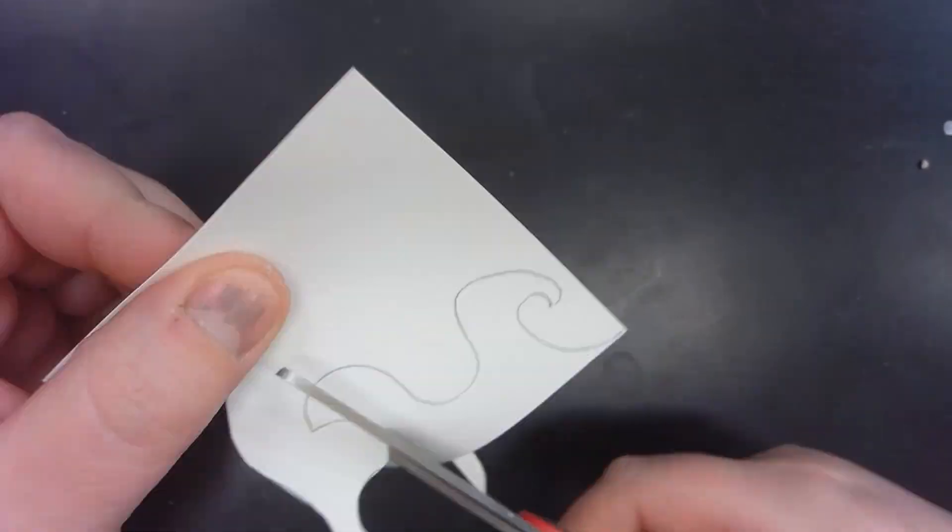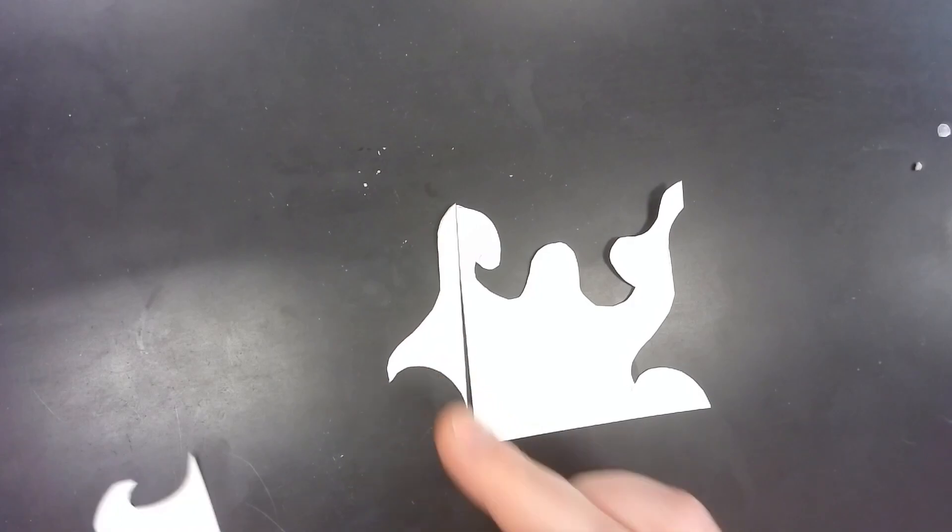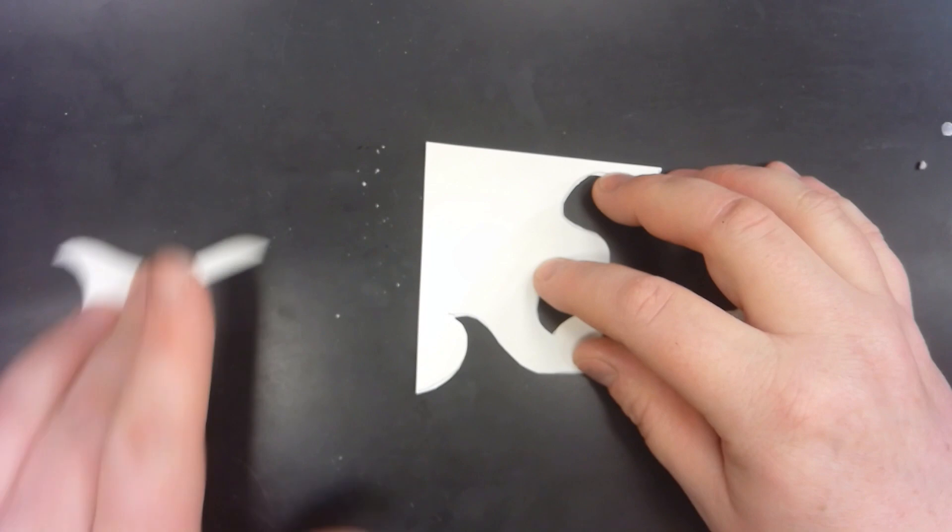Then we're going to cut out the designs. There are two ways that you could go about making the tessellation. You could take the design that you cut out and put it across from where it started, or you could rotate it as well.